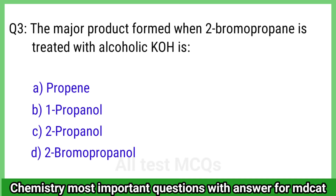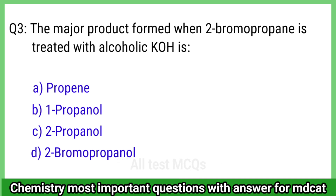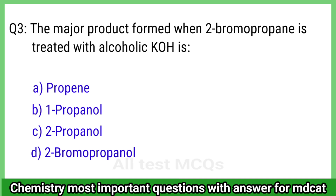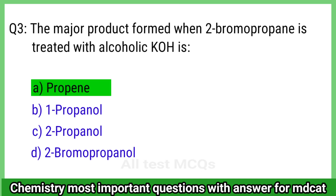Question 3: The major product formed when 2-bromopropane is treated with alcoholic KOH. The right answer is option A, propene.